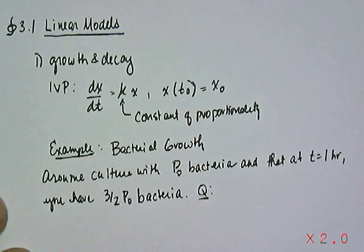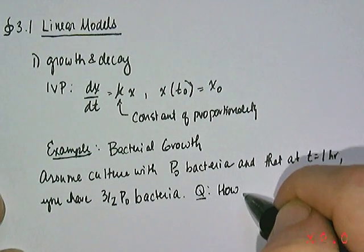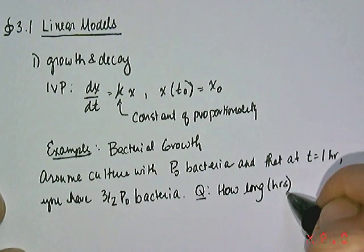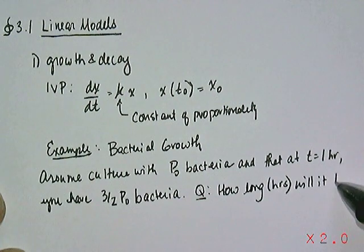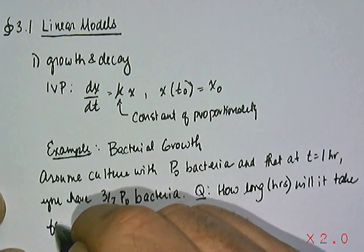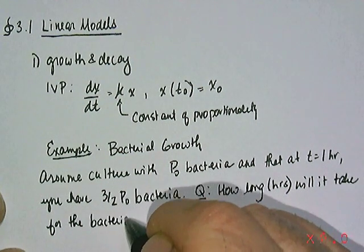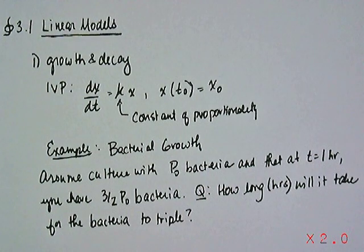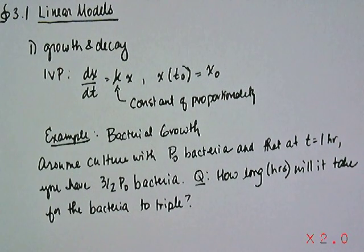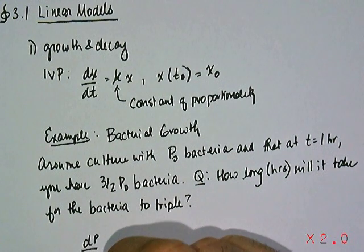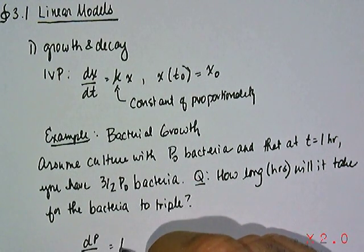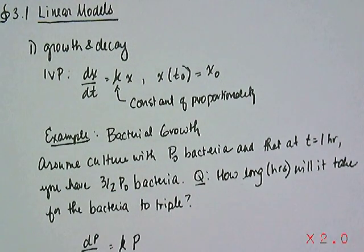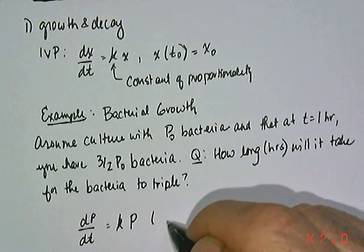The question we're interested in answering, here's the question: how long would it take, so how long in hours will it take for the bacteria to triple? In other words, we already know that after one hour it's grown to three halves P0. Now if you're thinking linearly, well that's assuming that bacteria grows that way, but it doesn't. It grows proportional to how much bacteria you have in terms of population growth and basic mating and so forth.